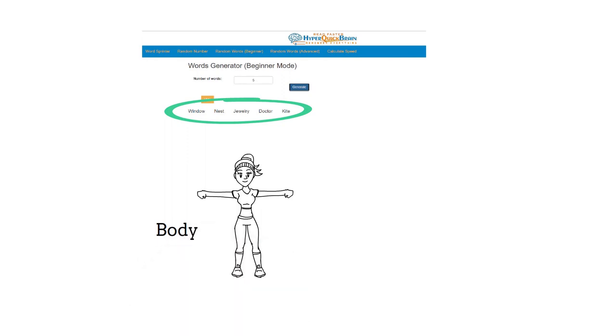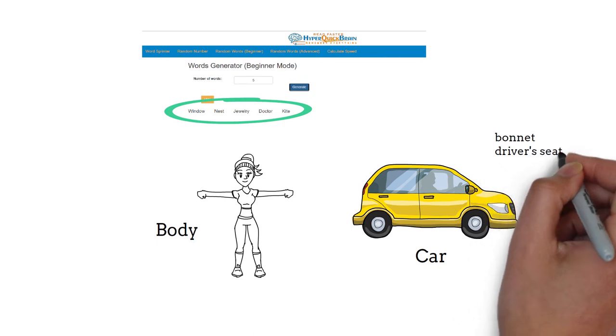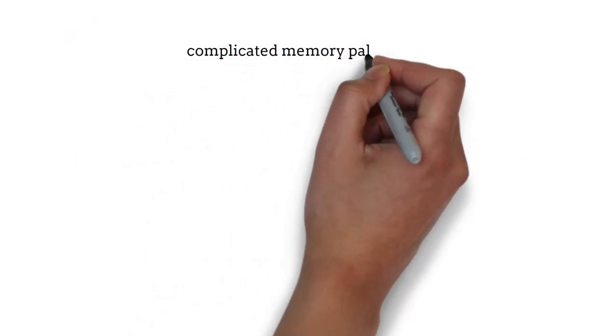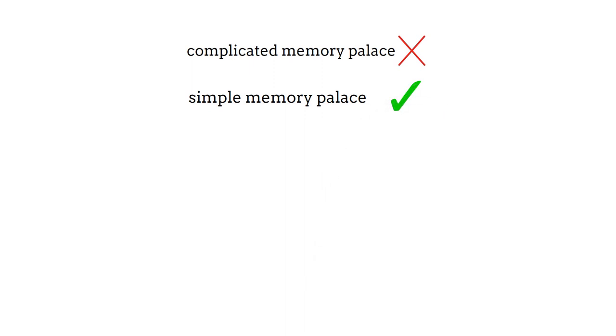Or you can use your car. You can assign the hook starting from the front as the bonnet, driver's seat, passenger seat, back trunk, and so on. Don't use a complicated memory palace at this point. Make it simple. We will cover those in future videos.